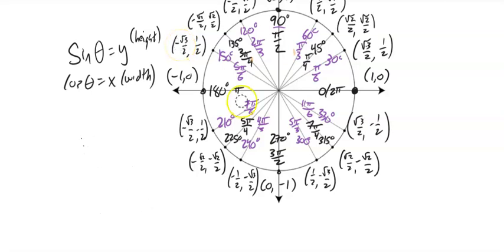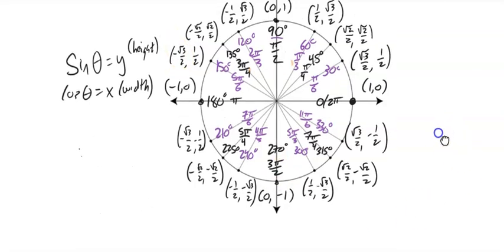Get familiar with the unit circle. You can Google a blank unit circle and try to build it on your own — that will really help. Think about the 30-60-90 and the 45-45-90 triangles. Post any questions in the forum or message me, and give a try to those practice problems. It's important to get that practice in.